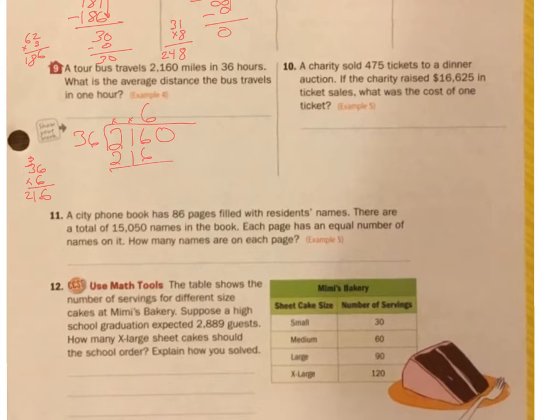So I put my 6 here. Equals 216. Subtract that out. I have to bring this number down, 0. How many times does 36 go into 0? It goes in there 0 times. Subtract it out. I have 0 with no numbers left to go. So 60 miles is my answer.